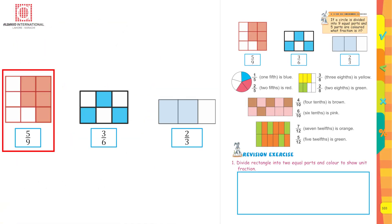In the next picture, it is divided into nine equal parts and five out of nine parts are colored. For the next two pictures, work them out the same way.